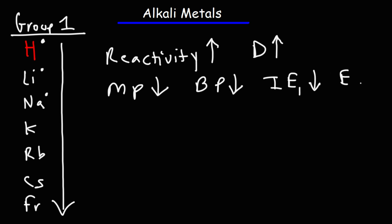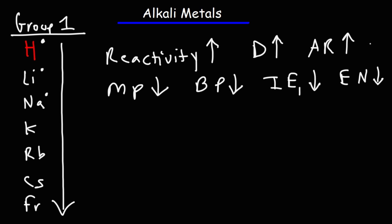The electronegativity also decreases as you go down, so lithium is more electronegative than cesium, which means cesium is more electropositive than lithium. The atomic radius increases as you go down, and the same is true for the ionic radius — that increases as you go down the group. Those are some trends you need to be aware of when dealing with alkali metals.